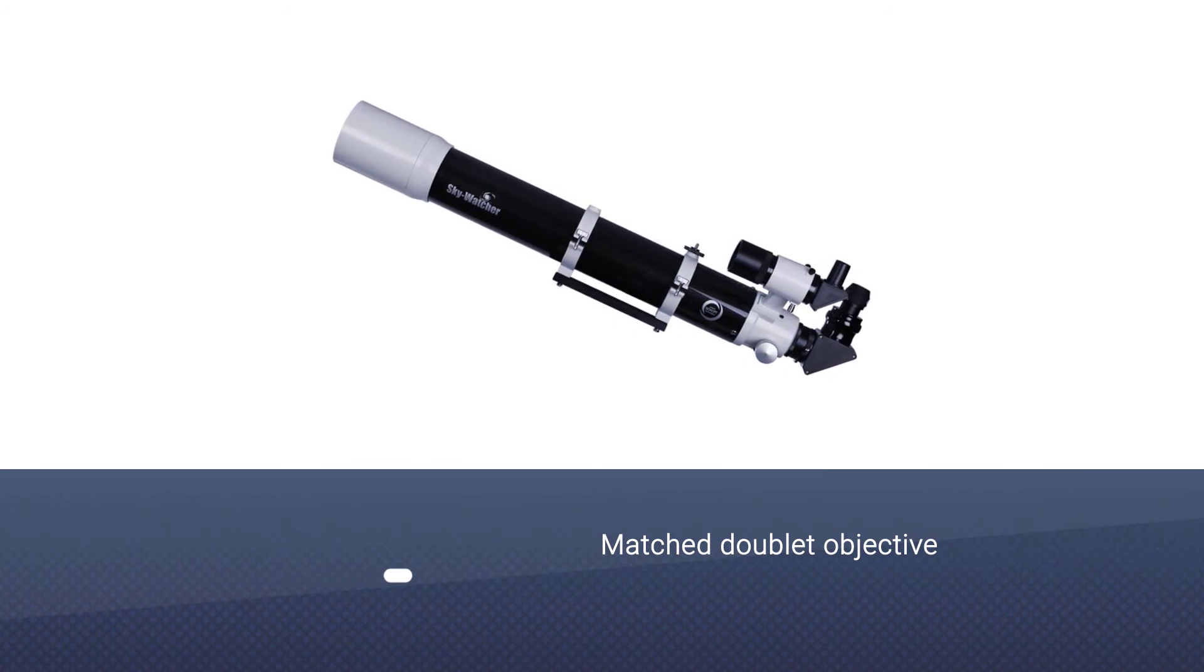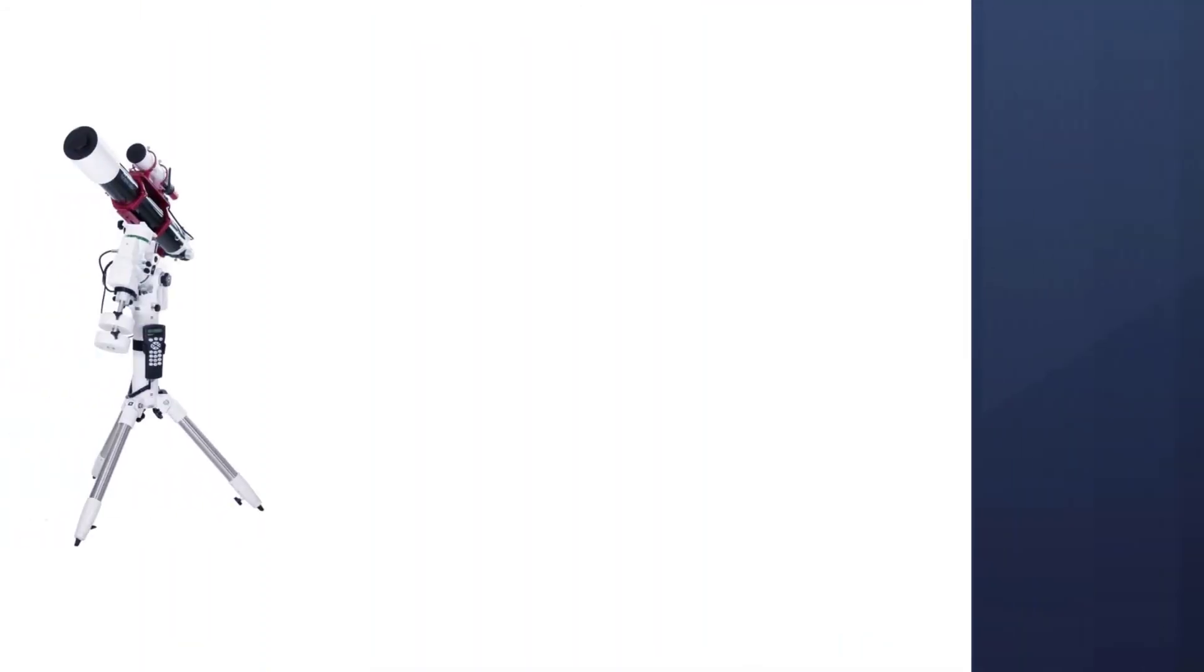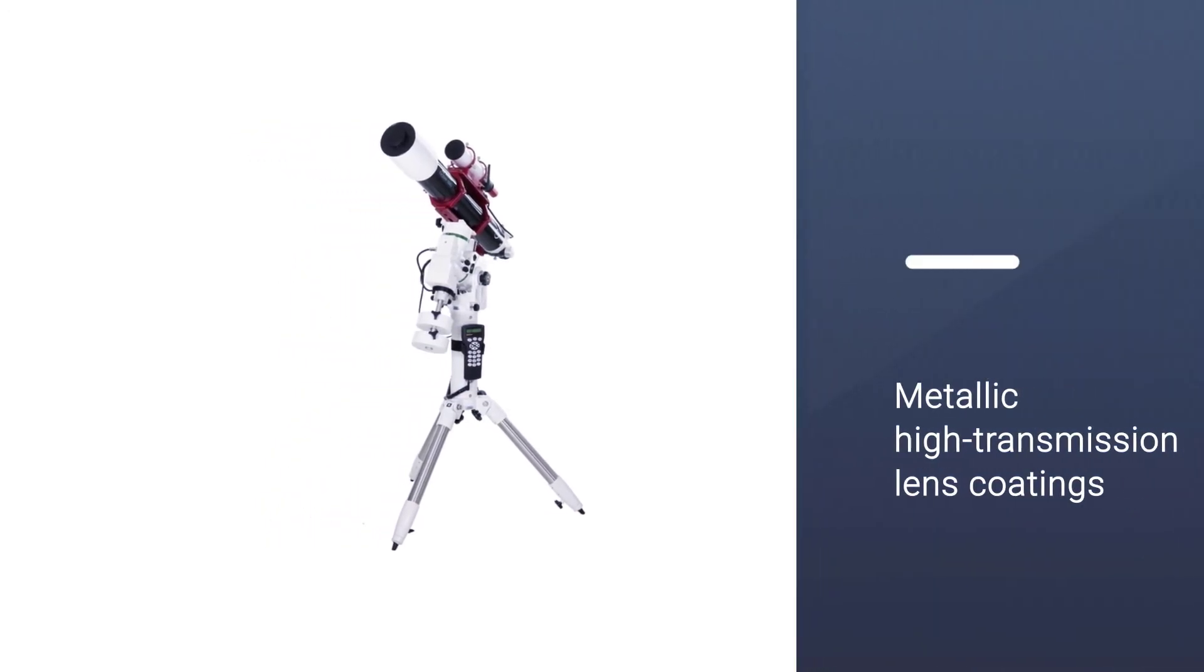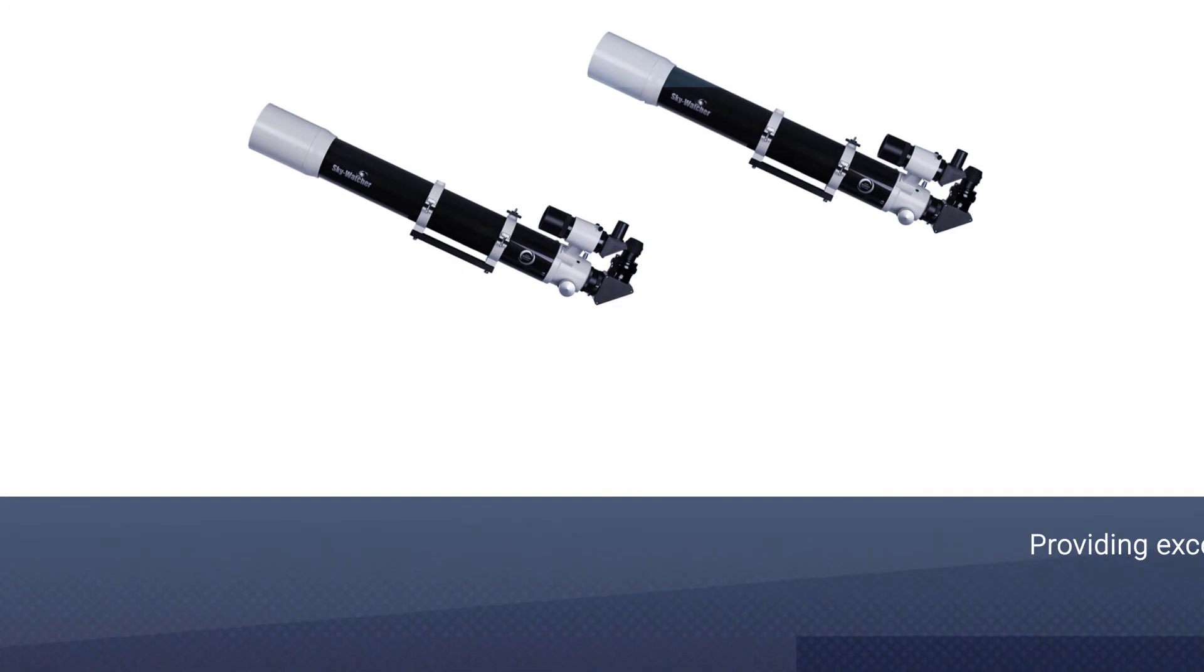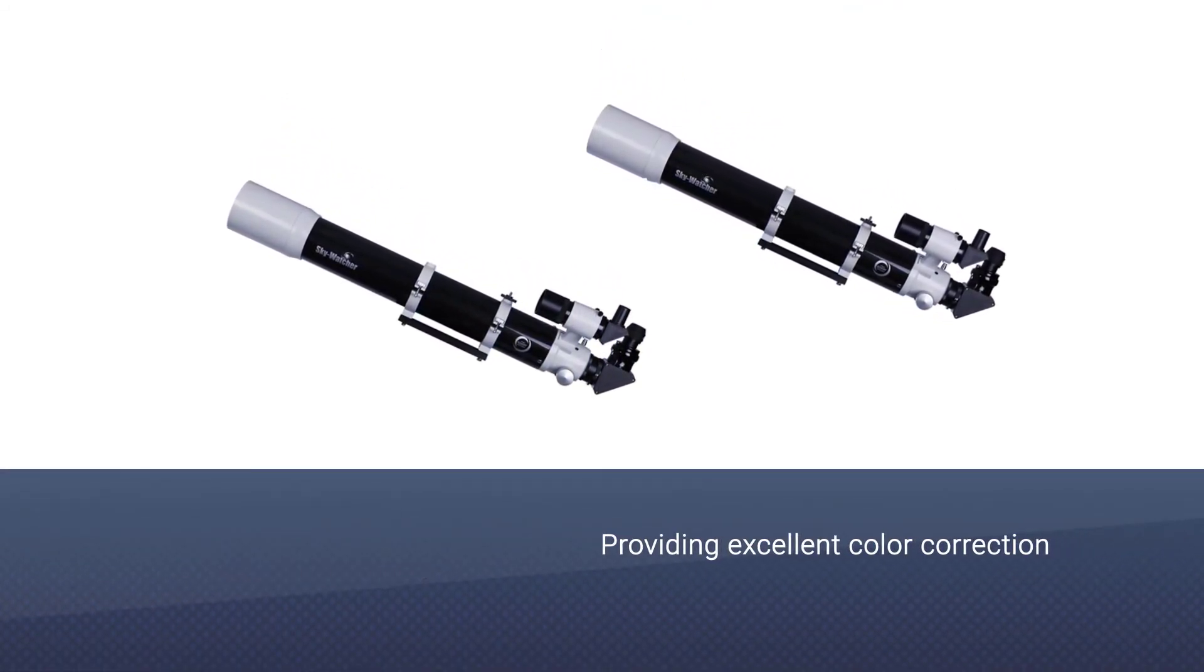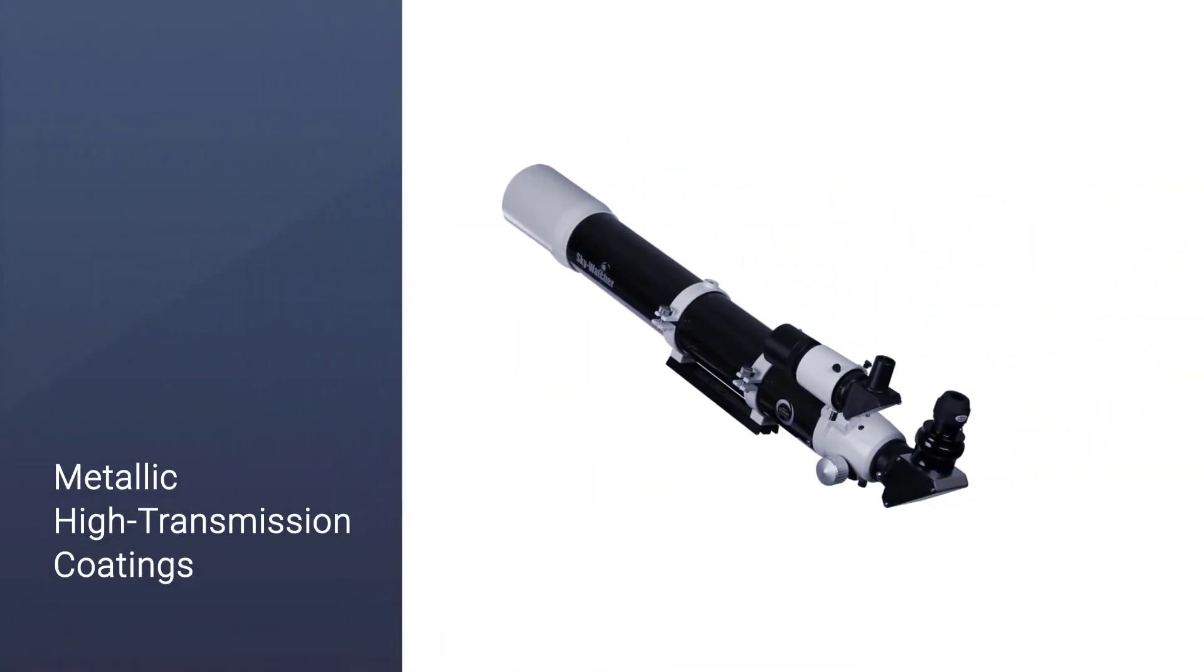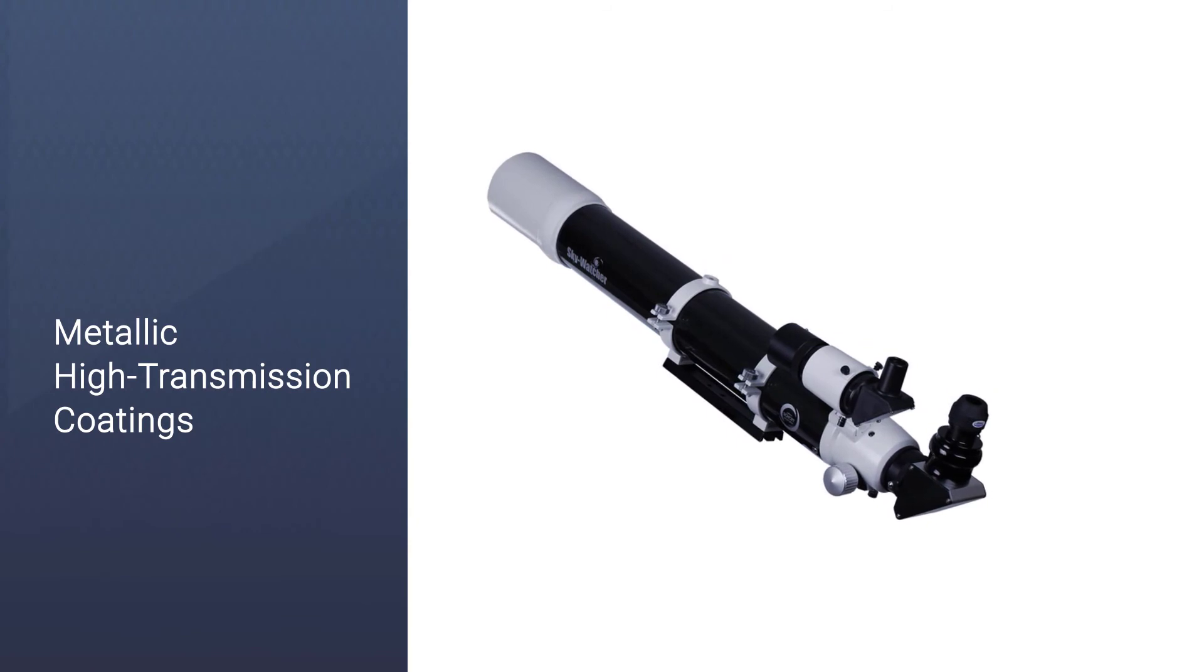Number seven: Sky-Watcher Evo Star 100 APO Doublet Refractor. Ultra serious planet watchers, photographers and astronomers looking for a very high quality refractor scope. The Evo Star series features a matched doublet objective including one synthetic fluoride element providing excellent color correction for visual and photographic uses. Using the finest quality glass and proprietary metallic high transmission coatings MHTC, Evo Star refractors produce tack sharp images with accurate color and minimal aberrations.